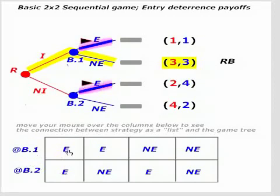Take the first column. It's got two E's in it, which means that at B1, if we're just looking at the upper column, the column list just says at B1 I'll enter, at B2 I'll enter. It's kind of like, I'll enter no matter what.